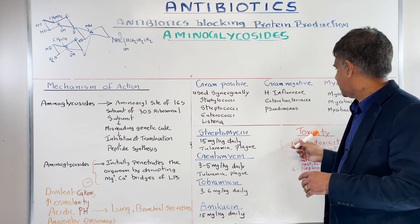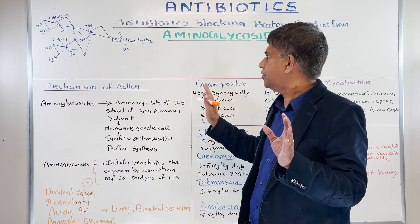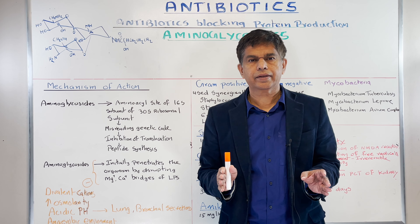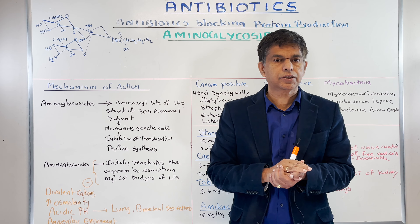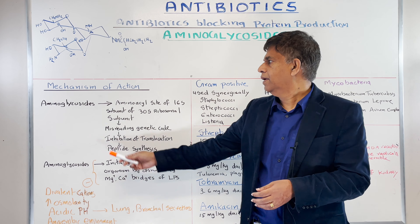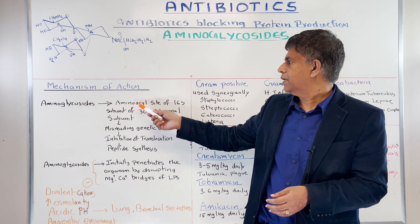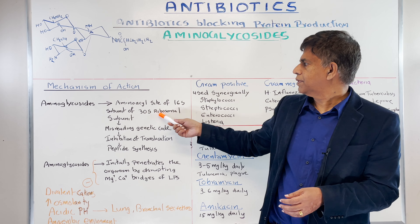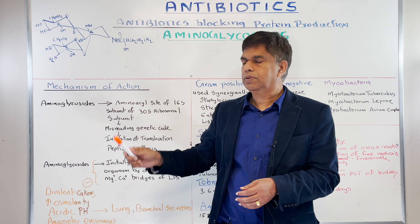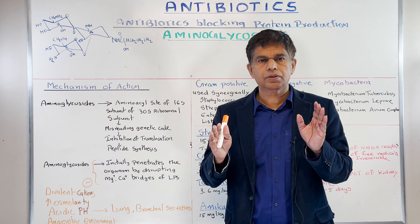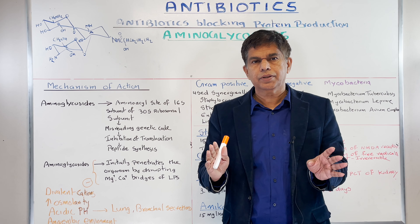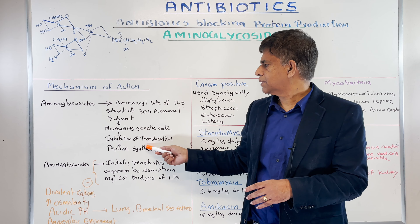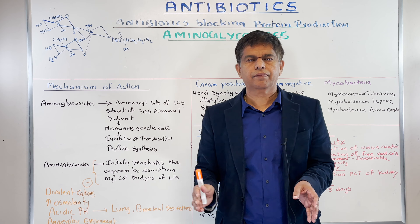It does cause some toxicities, but before we get to that, let's look at how it acts. The mechanism of action is very, very important for examination purposes. Aminoglycosides bind to the aminoacyl site of the 16S subunit of the 30S ribosomal subunit. The main keyword is the 30S subunit — they act on it, causing misreading of the genetic code, inhibition of translocation, and ultimately peptide synthesis is affected.